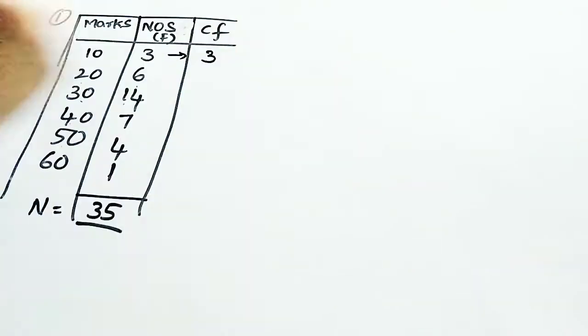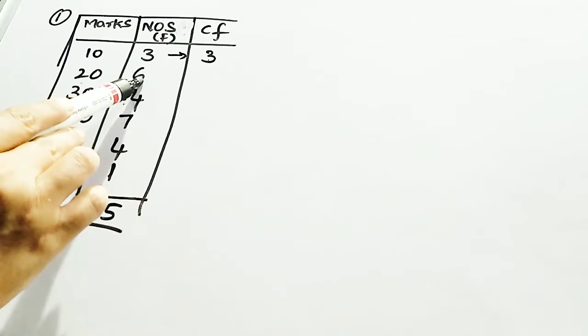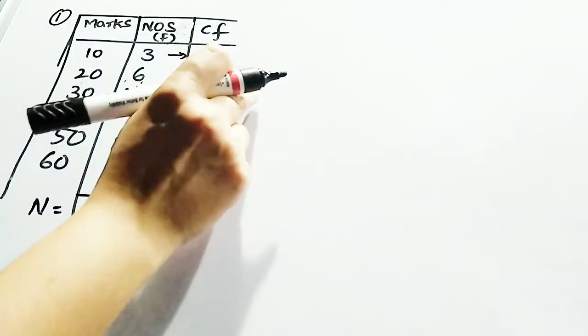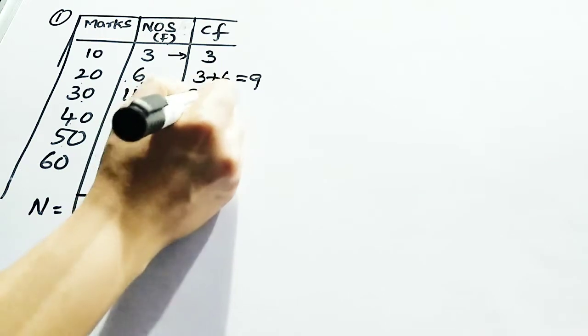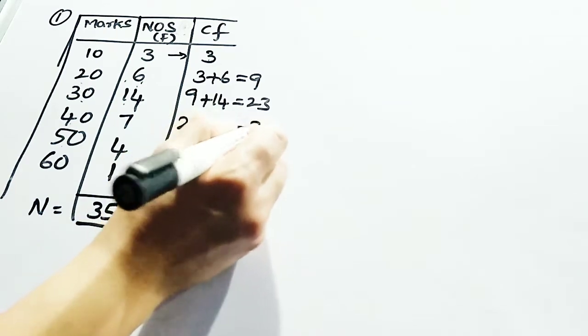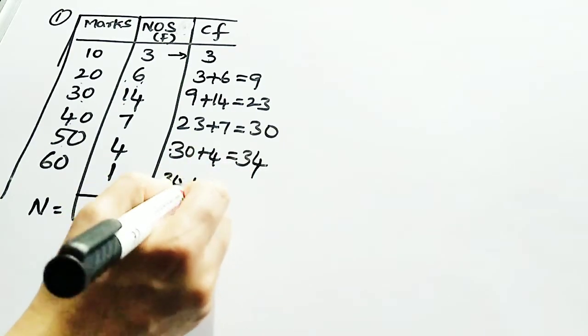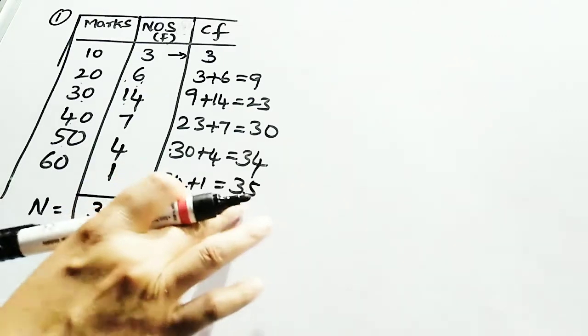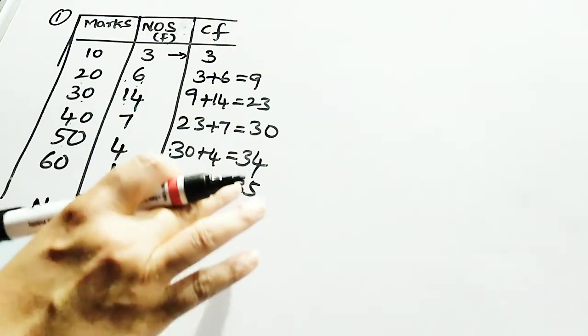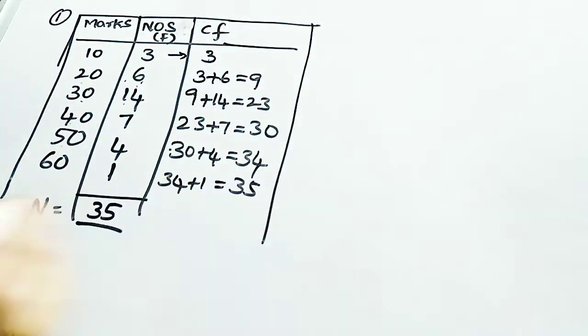To find cumulative frequency, take the first row value as it is. Then add the cumulative frequency with the next item: 3 + 6 = 9, then 9 + 14 = 23, then 23 + 7 = 30, then 30 + 4 = 34, then 34 + 1 = 35. The last cumulative frequency value equals n, which is 35. This is the method for finding cumulative frequency.